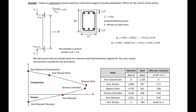In this example problem, we're going to create an unfactored moment-axial force interaction diagram that includes slenderness effects for the column shown. We have a 20-inch by 12-inch column with three number nine bars on each face. Our f'c is 4 ksi and we have grade 60 steel, which means our fy is 60 ksi.